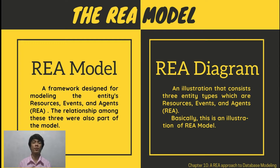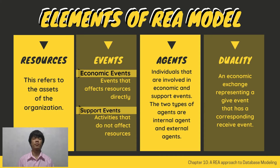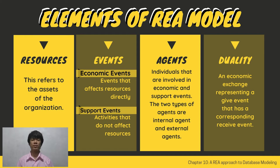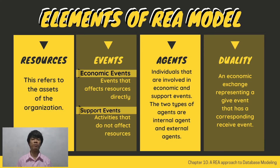Let's move on to the Elements of REA. There are four elements that consist of the REA model: Resources, Events, Agents, and Duality. Resources refer to the assets of the organization. Events are classified into two types: Economic Events and Support Events. Economic Events are events that directly affect resources — basically, they affect the assets directly. Support Events are activities that do not affect resources directly.